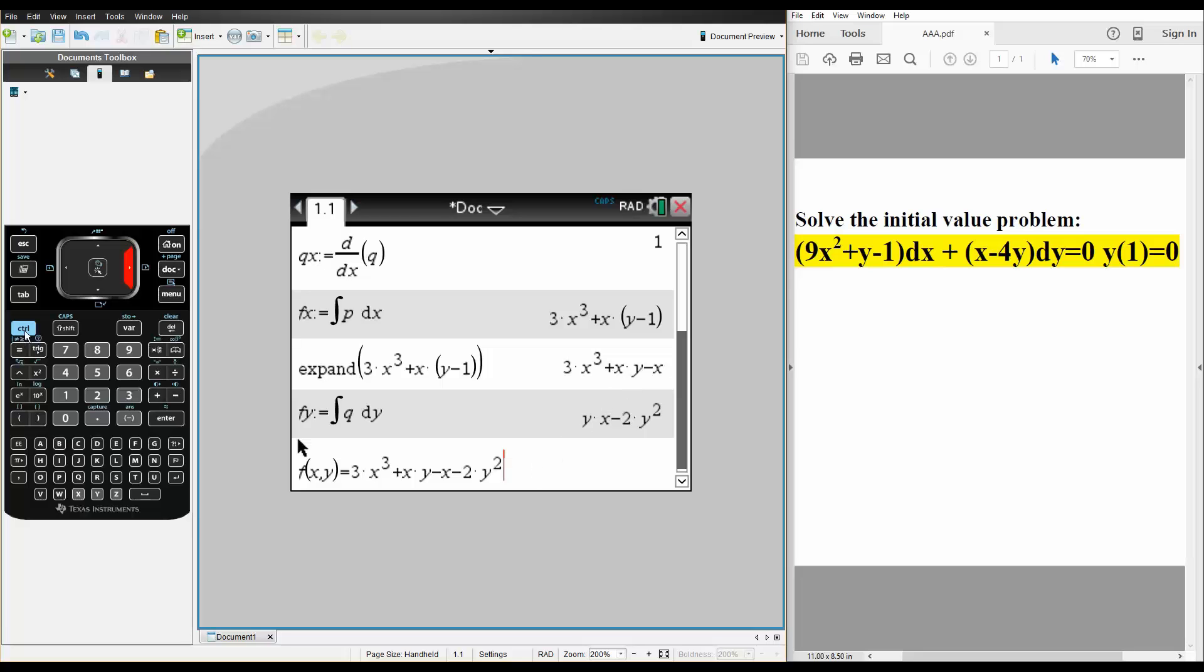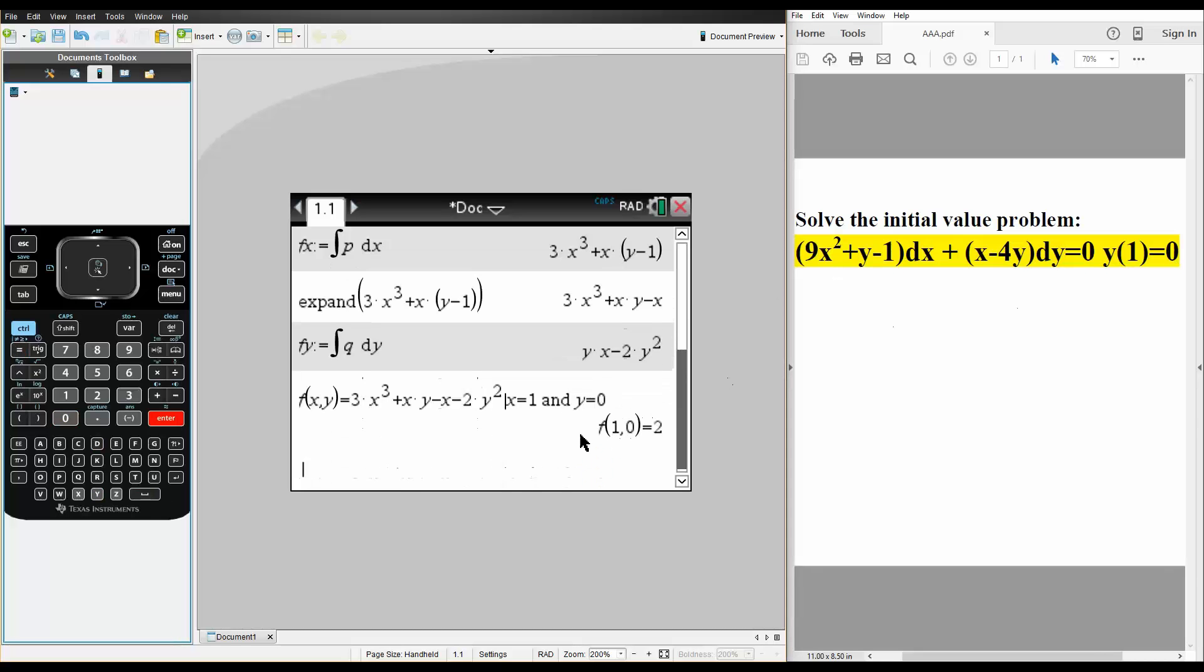And the next thing we do is, we hit control, equal, straight line down. We say that x is equal to 1, space, so this button right here, and y is equal to 0. We get 2.